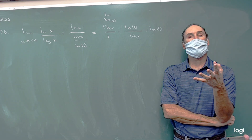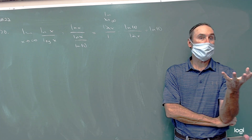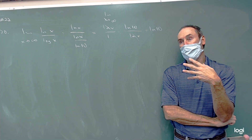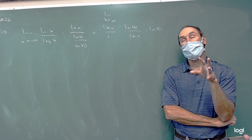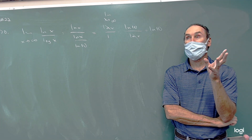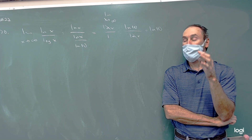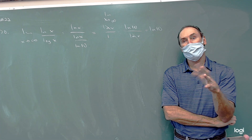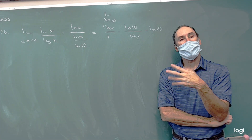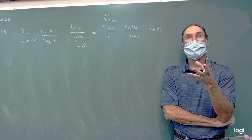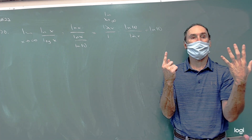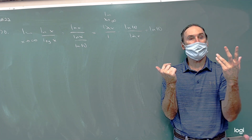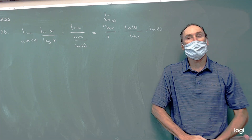60% of the BC exam is identical to the AB exam, so you will see all of the same things you did last year. Typically, two-thirds of the multiple choice questions are identical, and then you'll get some that the AB kids won't see. On the free-response, it's usually six problems — three of them are going to be shared with AB, and three will be unique to BC.